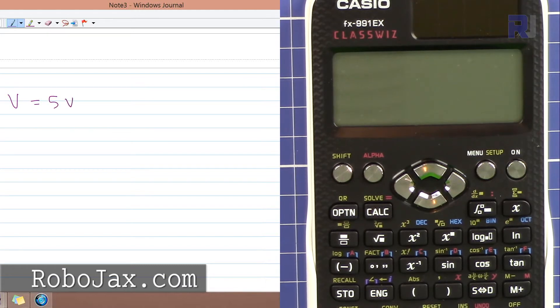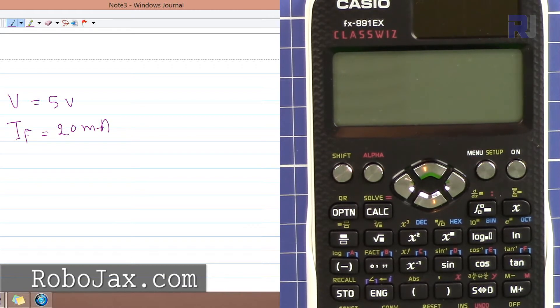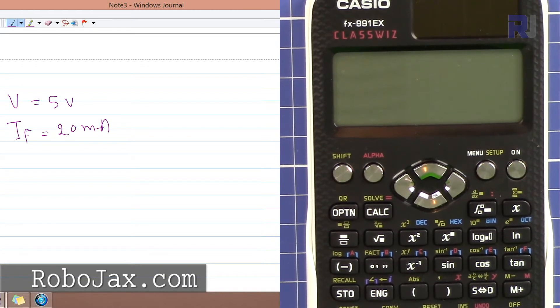The voltage source is 5 volts and the forward current is 20 milliampere. So let's say you have these specs and you want to turn on an LED with 5 volts. You have to do some calculation and put a resistor.